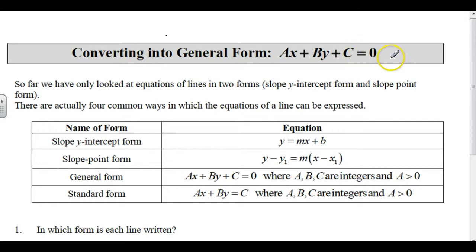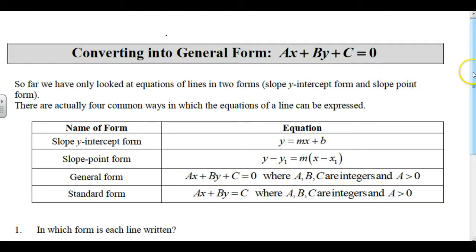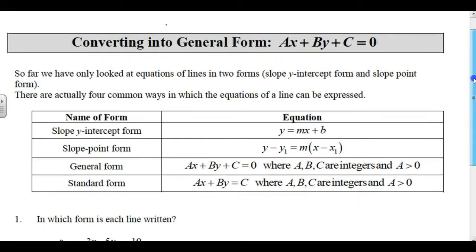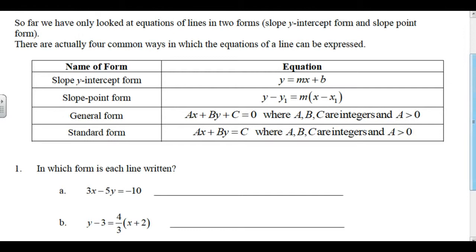So far, we've only looked at equations of lines in two forms: slope-y-intercept and slope-point form. There are actually four common ways in which equations of a line can be expressed: slope-y-intercept form, slope-point form, and general form.